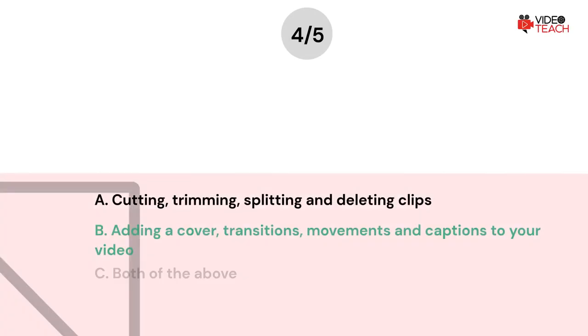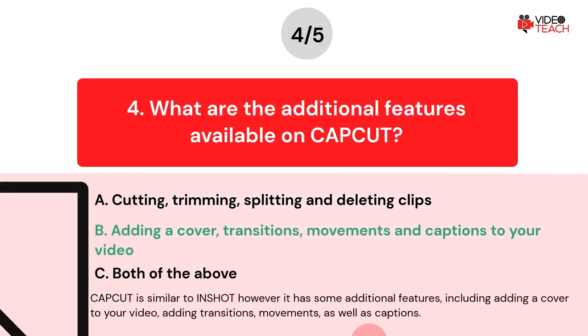The correct answer is B. CapCut is similar to InShot, however it has some additional features, including adding a cover to your video, adding transitions, movements, as well as captions.